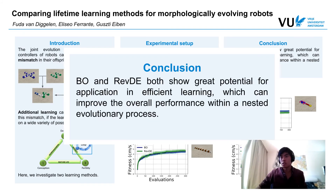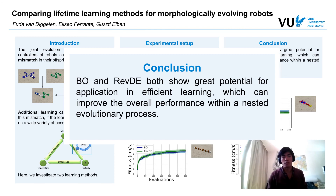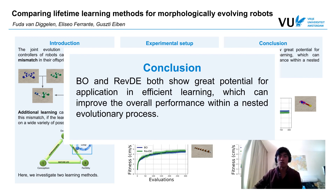We can conclude that Bayesian optimization and reversible differential evolution both show great potential for the application of lifetime learning. As efficient learners, it will be very interesting to see how well they can improve overall evolutionary performance when nested into the evolutionary process. That's it for me, and I hope to see you during the questions.